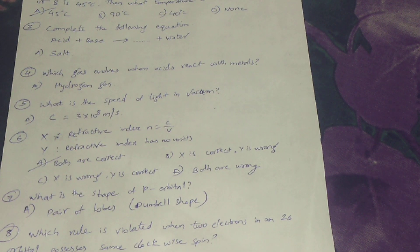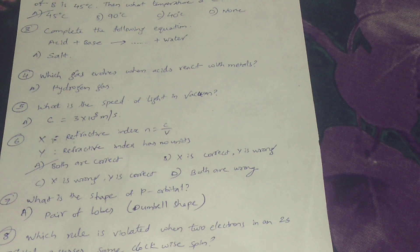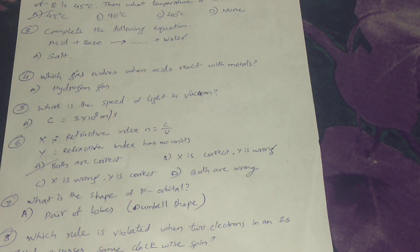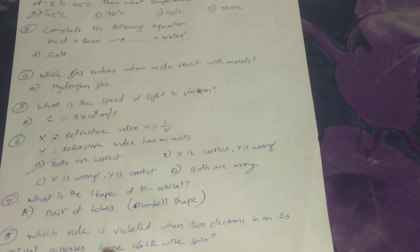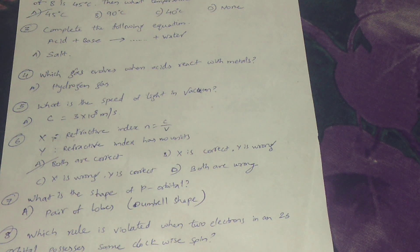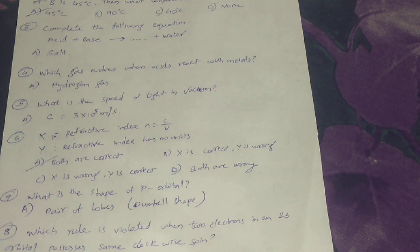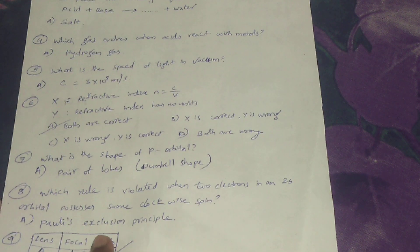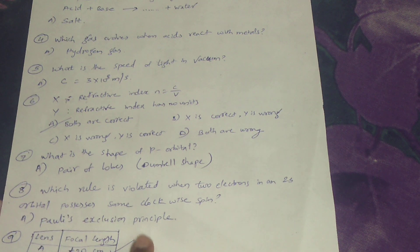Seventh, what is the shape of P orbitals? Pair of lobes means dumbbell shape is the answer. Next, which rule is violated when two electrons in 2S orbital possess the same clockwise spin? Pauli's exclusion principle is the answer.